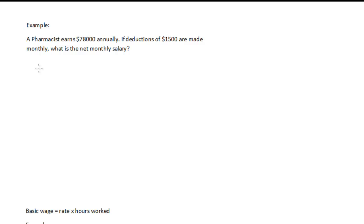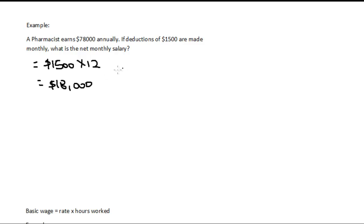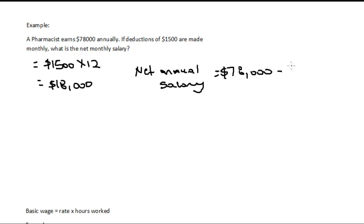We know that he makes $78,000 annually and they make deductions of $1,500 a month. Let's determine how much those monthly deductions sum to per year. We multiply the $1,500 monthly deduction by 12 to see how much that sums to per year, and that gives us $18,000.